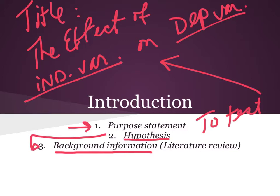The third part of your introduction is your background information, also called the literature review. In your background information, you're going to be citing scientists, authors, and books. None of the information will be your own — all of it will come from some source: a book, an article, a video, or class notes. Every statement you make about background information must be backed up by some author or source, and you'll cite all of those things. After writing all your background information supporting your hypothesis, that wraps up your introduction.